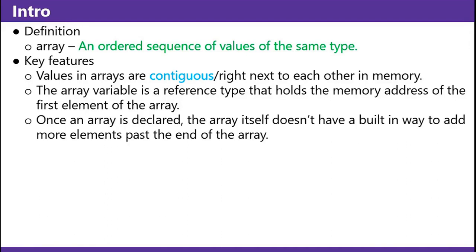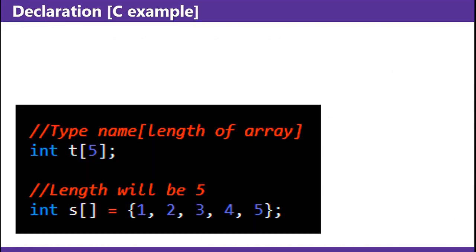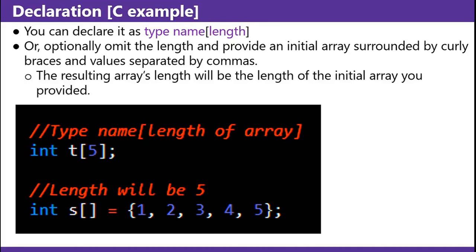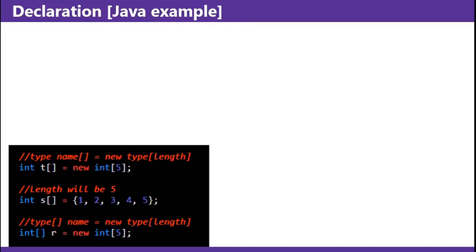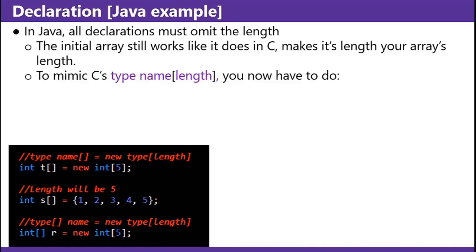Once an array is declared, the array itself doesn't have a built-in way to add more elements past the end of the array. It depends on the language whether or not the array has a built-in way to figure out its length — where its length is the number of elements in an array. Declaration — this is a C example. You can declare it in C as 'type name square brackets length', or optionally omit the length and provide an initial array surrounded by curly braces with values separated by commas. This is a Java example. In Java, all declarations must omit the length. To mimic C's 'type name bracket length', you now have to do 'type name brackets equals new type brackets length'.